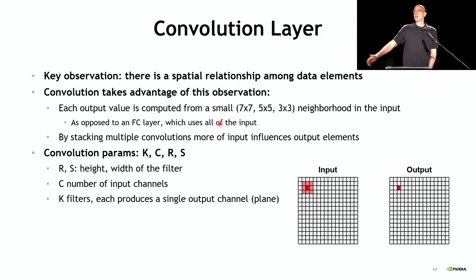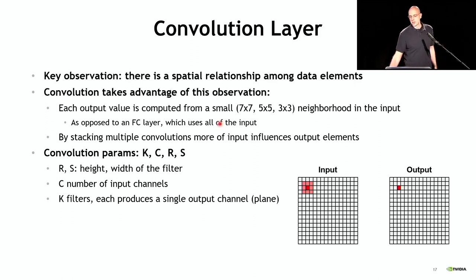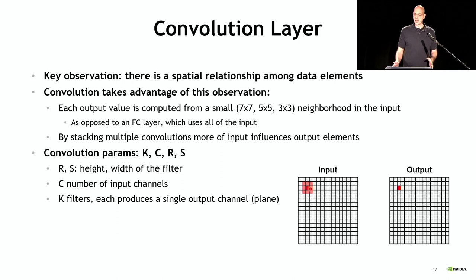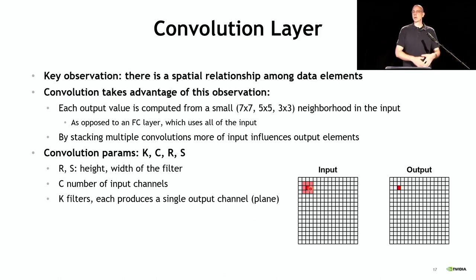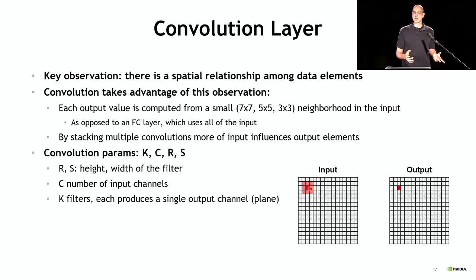By stacking a sequence of convolutions, you keep expanding how much of the original input influences a particular output pixel. A single convolution with a 3×3 neighborhood stacked twice now means the output pixel is influenced by a 5×5 neighborhood. After a sequence of convolutional layers, output elements can see all of the input image — a similar effect to fully connected layers — but much cheaper computationally.